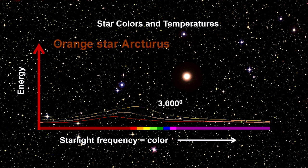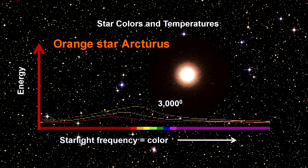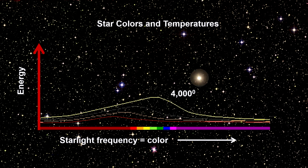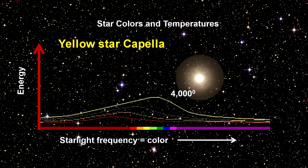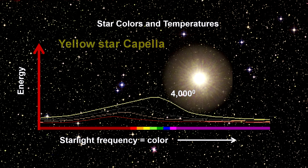By 3,000 degrees, the red has morphed to orange. Arcturus is an example of this. By 4,000 degrees, it is quite yellow. Capella and our own sun are yellow.